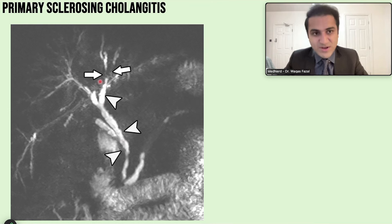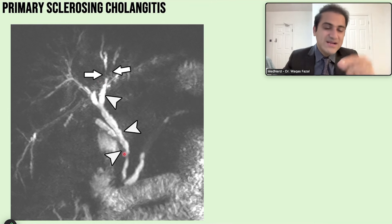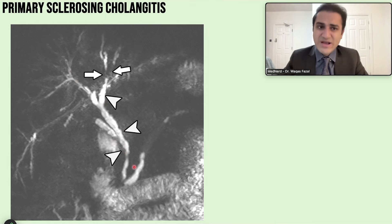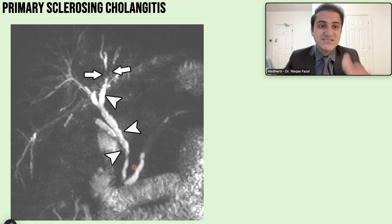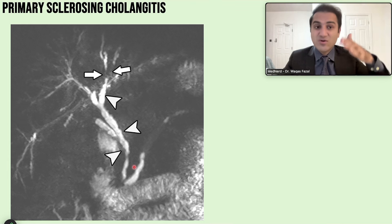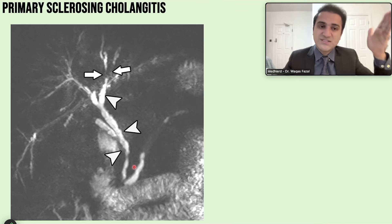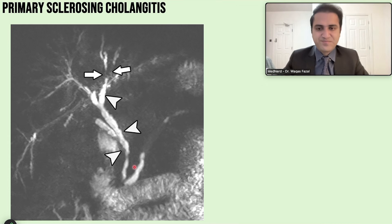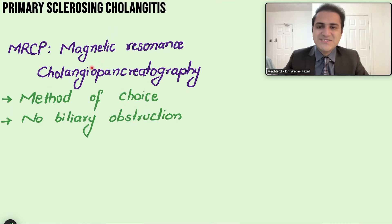MRCP shows dye travel and reveals strictures and duct damage. In ERCP, you also dilate the strictures, making it therapeutic as well. For diagnosis, MRCP is sufficient — ERCP is not needed for diagnosis because it carries risks, including inducing cholangitis and pancreatitis.